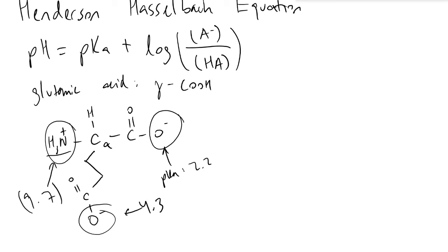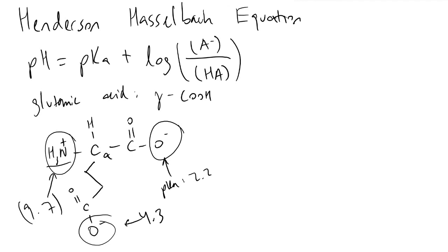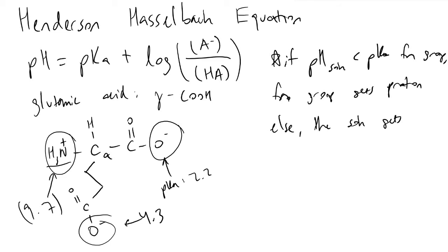The key intuition to have when analyzing a biomolecule in solution is this: if the pH of the solution is less than the pKa of the functional group, then the functional group gets the proton. Else, the solution gets the proton.